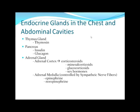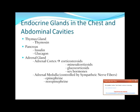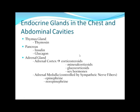Endocrine glands located in the chest and abdominal cavities: the thymus, located behind the sternum, makes thymosin. Thymosin is involved in T-lymphocyte maturation. T-lymphocytes are a type of white blood cell — they are produced in the red bone marrow and then go to the thymus gland to mature.